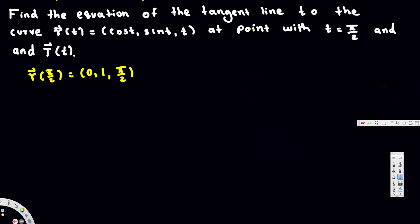To find the tangent vector, we take the derivative of the given function. The derivative r'(t) becomes ⟨-sin t, cos t, 1⟩. Now we plug in our t value to get the tangent vector.